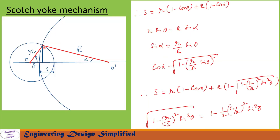From this diagram, the vertical distance can be written as r·sin(theta), which also equals R·sin(alpha). So r·sin(θ) = R·sin(α), giving sin(α) = (r/R)·sin(θ). Then cos(α) can be written as the square root of 1 minus (r/R)·sin(θ) squared. Substituting this cos(alpha) into the displacement equation, we get s = r(1 − cos θ) + R·(1 − √(1 − (r/R)²·sin²θ)).